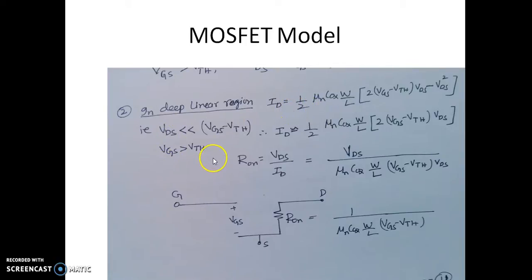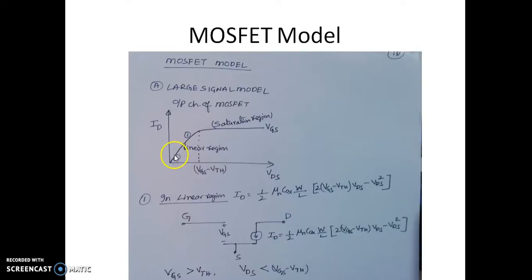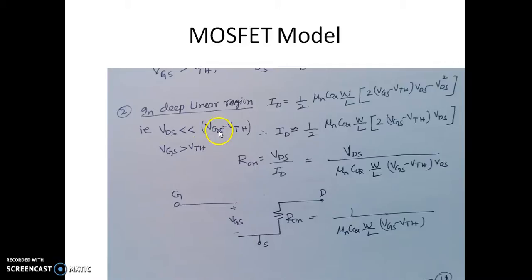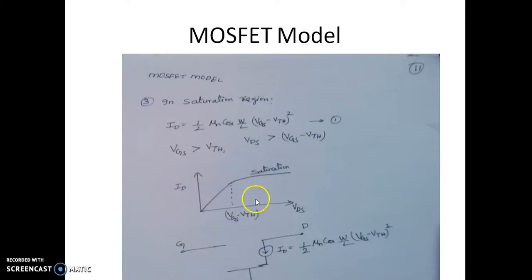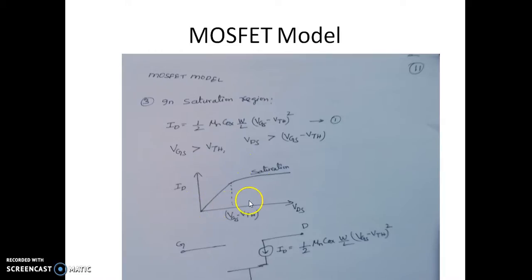Deep in the linear region, the value of VDS is far less than VGS minus VTH, so ID is a very small quantity and can be represented by this simplified equation. Therefore the MOSFET operating deep in the linear region is represented by a resistor, whereas in the broader linear region it is represented by a constant current source. When operating in the saturation region, the MOSFET is represented by a current source with the saturation current magnitude. So the three models are: saturation, linear, and deep linear region.